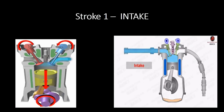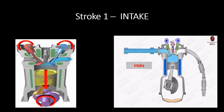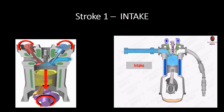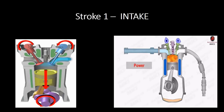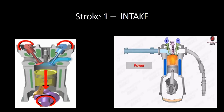An internal combustion engine consists of four strokes: intake, compression, power stroke, and exhaust. At the beginning of the intake stroke, the piston is close to TDC, the intake valve is opened, and the piston starts to move towards BDC, drawing air or an air-fuel mixture into the cylinder. This stroke is called intake because fresh air mixture is taken into the engine. The intake stroke ends when the piston is at BDC. During this stroke, the engine consumes energy, with the crankshaft rotating due to the inertia of the components.